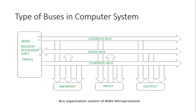The last type is the control bus. The control bus carries control signals. Control signals are generated by the control unit. The control bus is also unidirectional. Data flows through the data bus between the microprocessor, input/output devices, and memory devices.